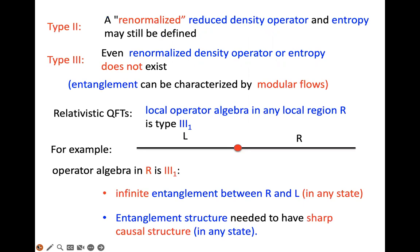This Type III₁ algebraic structure encodes that in quantum field theory, in any finite energy state, the entanglement between right and left is infinite. Moreover, Type III₁ captures the entanglement structure needed to have sharp causal structure in any state: the commutator of operators should vanish outside the light cone. Any other type of algebra doesn't give you this kind of sharp causal structure — only Type III₁ does. So it's no accident that relativistic quantum field theory is given by Type III₁.